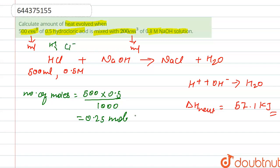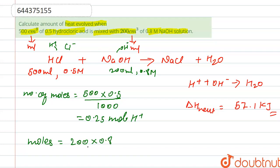Next, we calculate the moles of OH⁻ from NaOH. It is given as 200 mL and 0.8 M molarity. So: 200/1000 × 0.8 = 0.16 mol of OH⁻ ion.